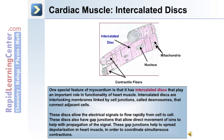These discs are interlocking membranes linked by cell junctions called desmosomes, which connect adjacent cells together. They allow electrical signals to flow rapidly from cell to cell. They also have gap junctions that allow direct movement of ions to help with propagation of the signal. The gap junctions help to spread depolarization in the heart muscle in order to coordinate simultaneous contractions.